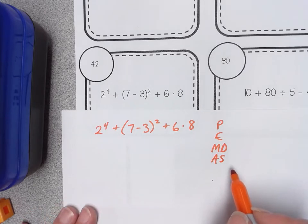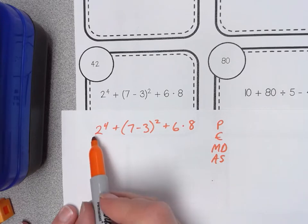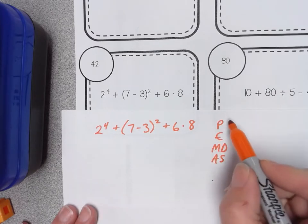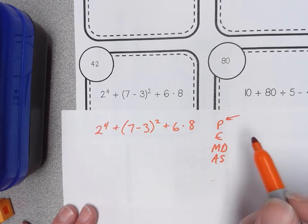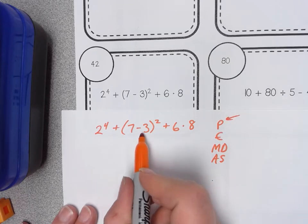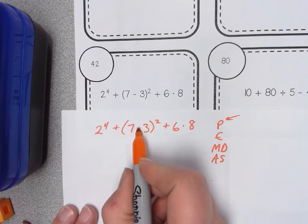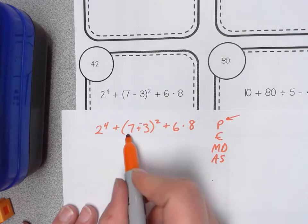So before I even start I notice I do have exponents which really tells me that in a minute I might want to expand this. Before I go there let's remember our parentheses. So 7 minus 3 I really could do or you could change it to add the opposite and we could simplify this step.